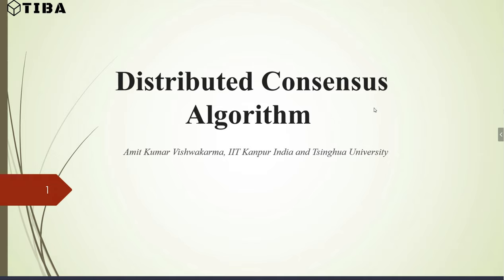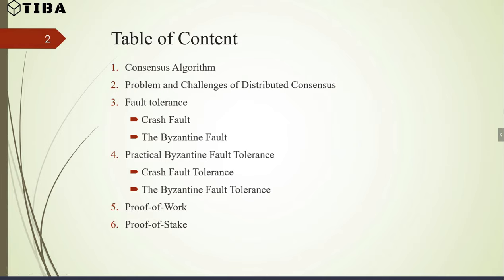Good evening everyone, this is Amit. We're going to start with distributed concepts and algorithms, and how we move from fault tolerance to blockchain consensus algorithms. I'll discuss what consensus algorithms are, the problems and challenges of distributed consensus, fault tolerance — including crash fault and Byzantine fault tolerance — and then move to blockchain consensus algorithms including proof of work and proof of history.